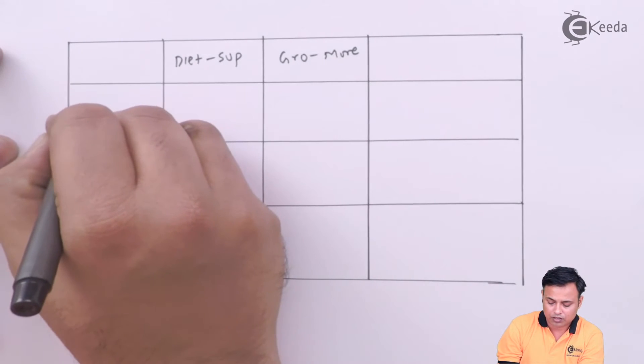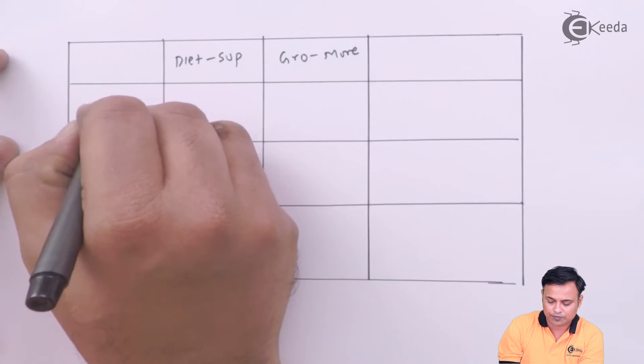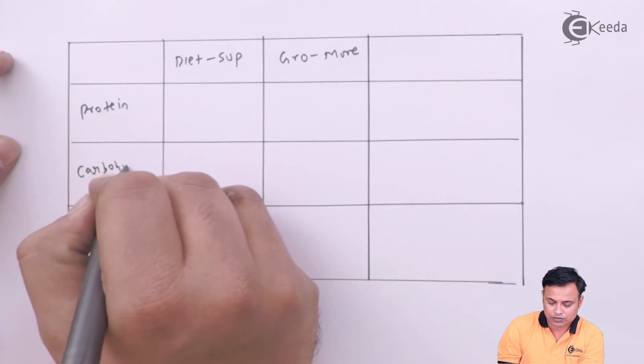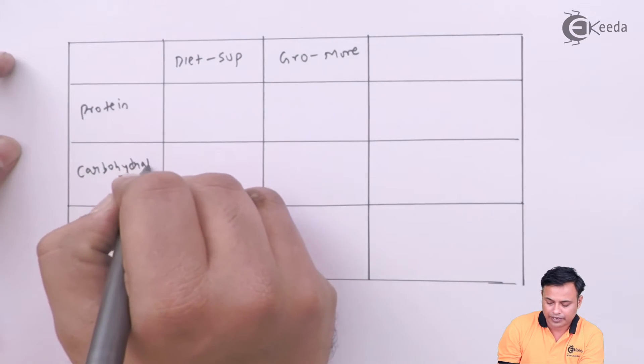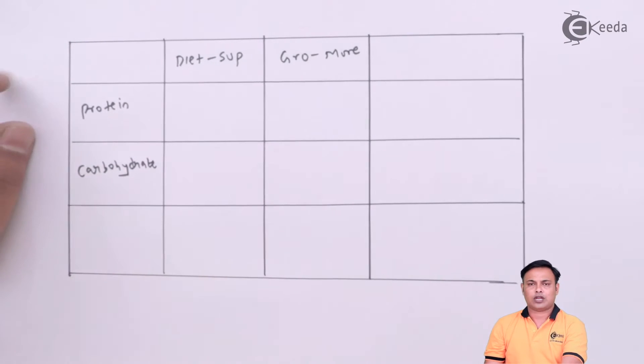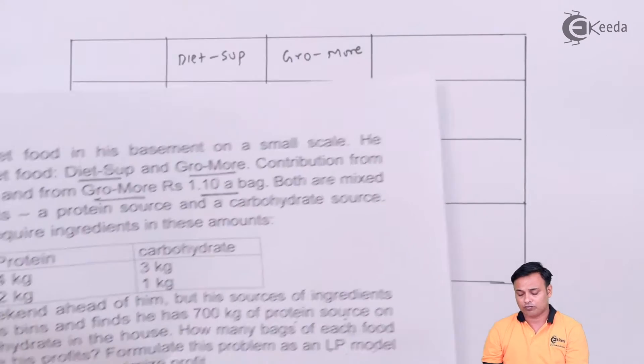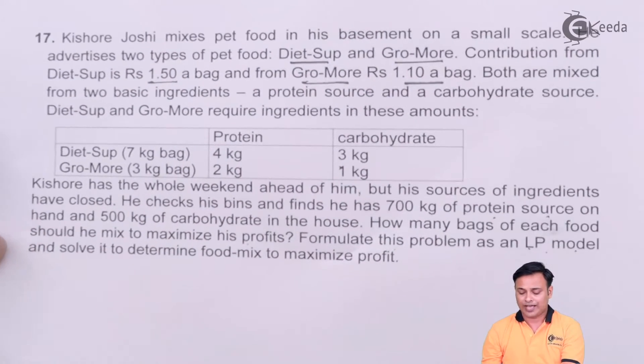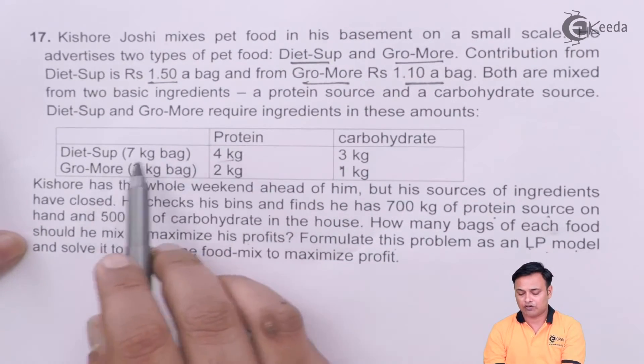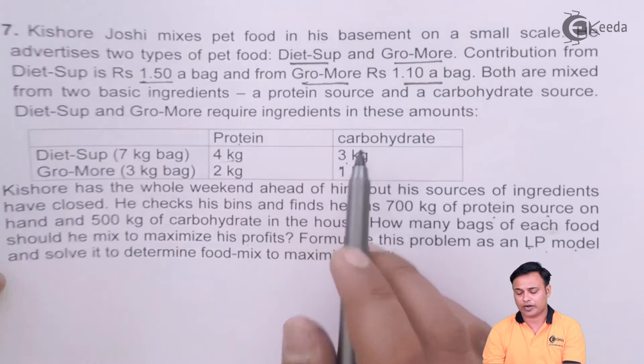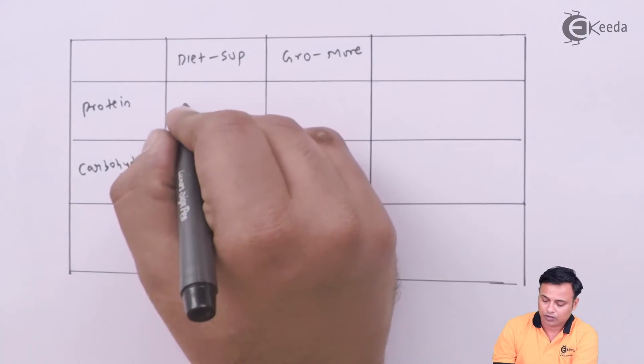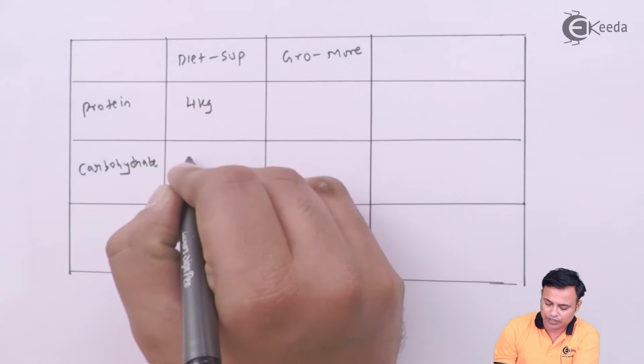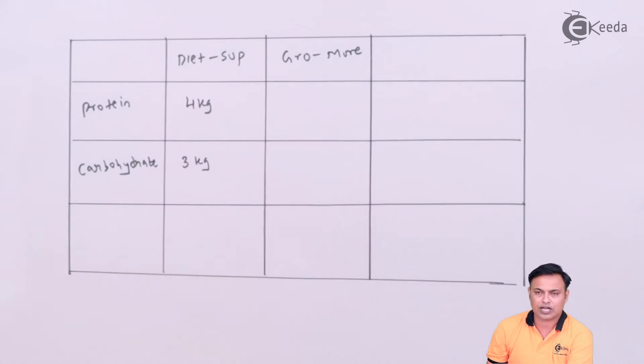And here are my raw materials, one is protein, one is carbohydrate. How much of protein and how much of carbohydrates in each of these two mixes? We have 4 kg of protein and 3 kg of carbohydrates in Diet-Sup.